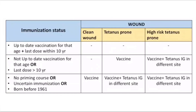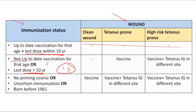This schedule summarizes what we discussed. For a patient who is up to date on vaccination and received the last dose less than ten years ago: no need to give vaccine or immunoglobulin, whatever the wound type. If the last dose was more than ten years ago — for example, a child vaccinated at age three who is now fifteen — and has a clean wound, give nothing; if it is a tetanus-prone wound, give vaccine only; if it is high-risk tetanus-prone, give both immunoglobulin and vaccine.